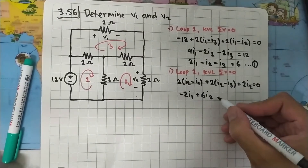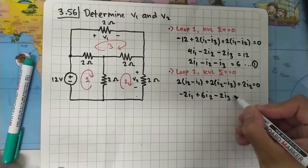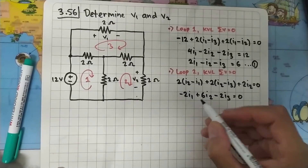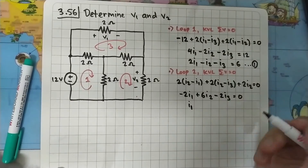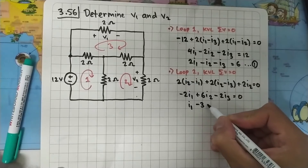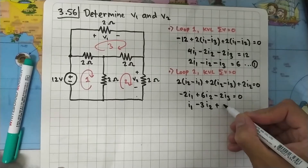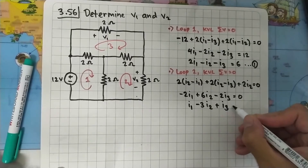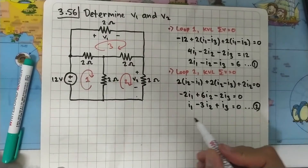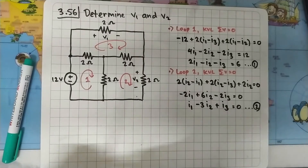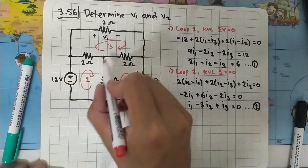Dividing the loop 2 equation by -2 gives: I1 - 3I2 + I3 = 0. This is Equation 2. Now let's move on to loop 3.